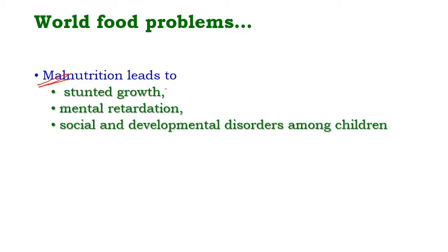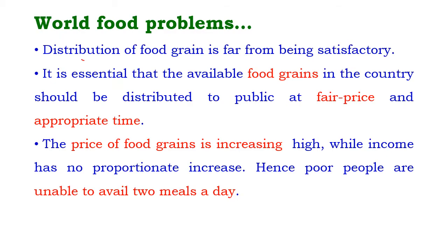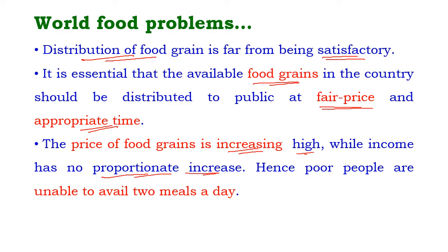Malnutrition leads to stunted growth, mental retardation, and social and developmental disorders among children. The distribution of food grains is far from satisfactory — it is essential that available food grains are distributed to the public at a fair price and in appropriate time. The price of food grains is increasing day by day while income has no appropriate increase to meet these rising prices.